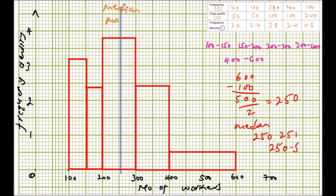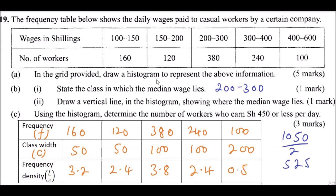Part c asks us to use the histogram to determine the number of workers who earned 450 shillings or more per day, and this is worth three marks.